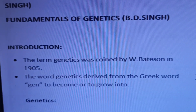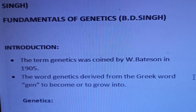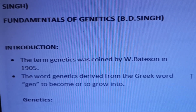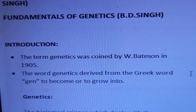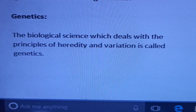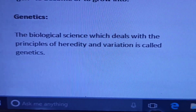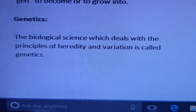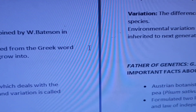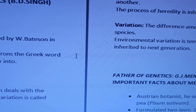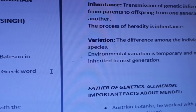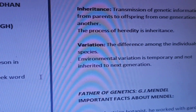The term Genetics was coined by William Bateson in 1905. That's a very important fact. The word Genetics was derived from a Greek word meaning 'to become' or 'to grow into.' The simple definition of Genetics is: it is the biological science which deals with the principles of heredity and variation. I am going to say what is important in a very crisp manner.